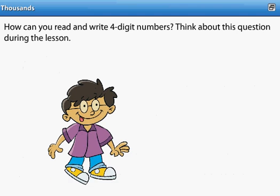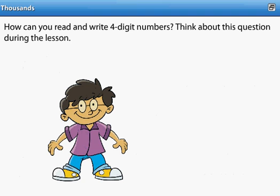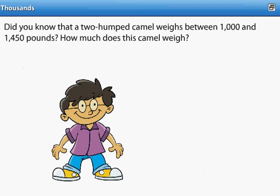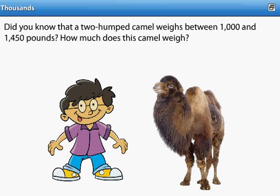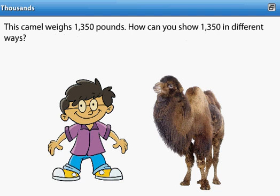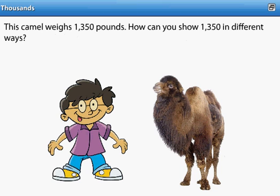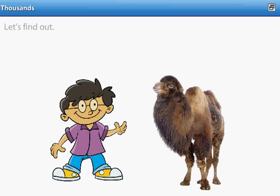How can you read and write four-digit numbers? Think about this question during the lesson. Did you know that a two-humped camel weighs between 1,000 and 1,450 pounds? How much does this camel weigh? This camel weighs 1,350 pounds. How can you show 1,350 in different ways? Let's find out.